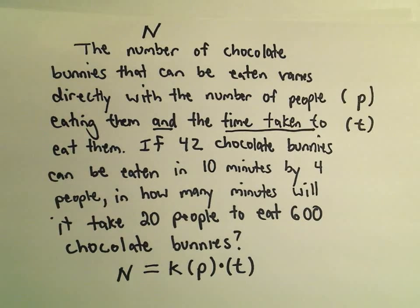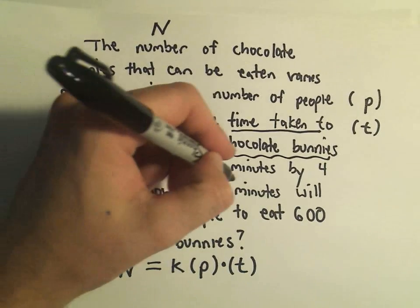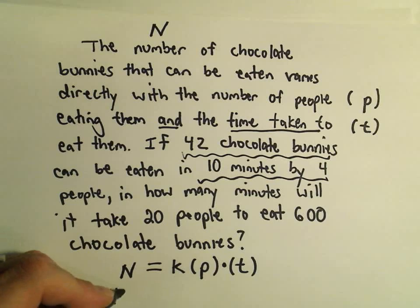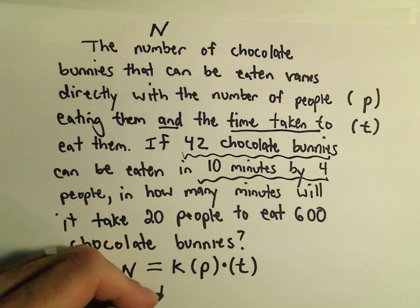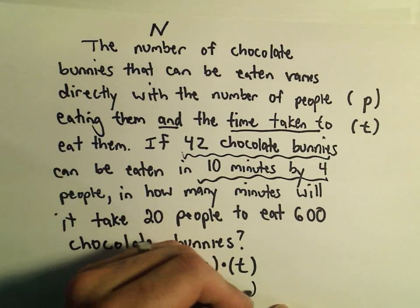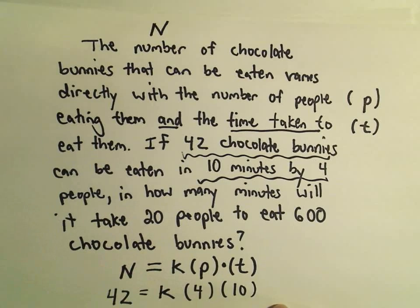So all I'm going to do is just take this middle sentence in here and plug in those numbers. So it says 42 chocolate bunnies. We don't know K. We're going to have to figure that out first. It can be eaten in 10 minutes. So we'll plug that in for 10 by four people.